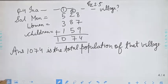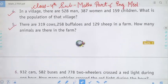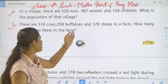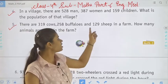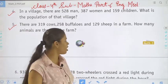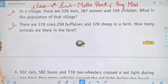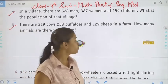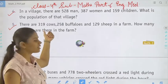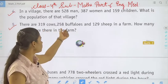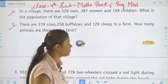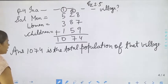Move to the next question. There are 319 cows and 258 buffaloes and 129 sheep in a farm. How many animals are there in the farm? Students, in a farm there are 319 cows, 258 buffaloes, and 129 sheep, so we have to do addition again.